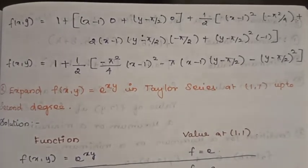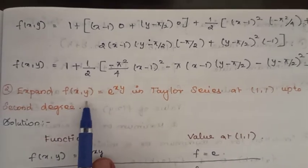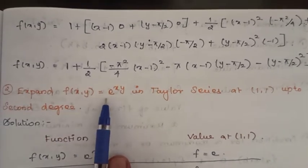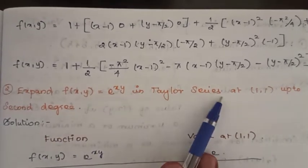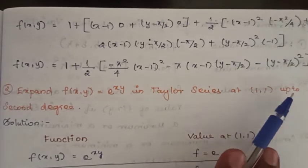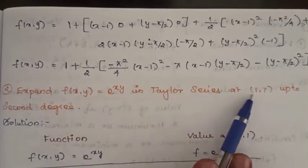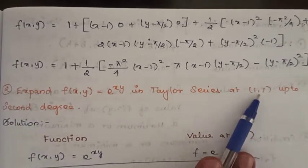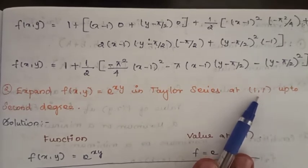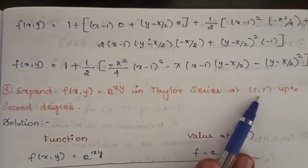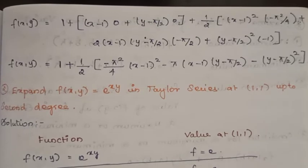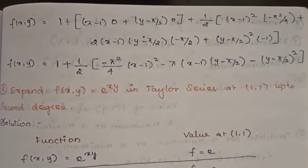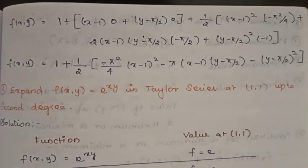Next problem: expand f(x, y) = e^(xy) in Taylor series at (1, 1) up to second degree. So here a = 1, b = 1. We need to find f, fx, fy, fxx, fxy, and fyy at the point (1,1).